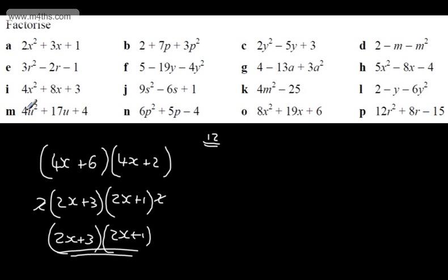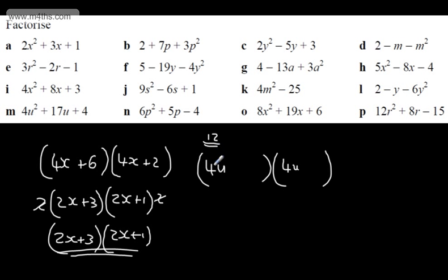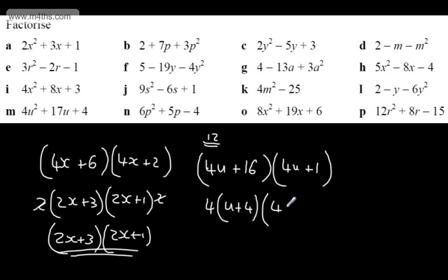For the next one, 4 times 4 gives 16. We'd have 4u in each bracket. We look for two numbers that multiply to give 16 and add to give 17 — that's 1 and 16. So we put 4u plus 16 and 4u plus 1. We can take 4 out of the first bracket, leaving u plus 4, then 4u plus 1. Cancel off, and that is our factored expression: (u+4)(4u+1).